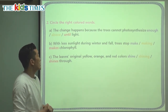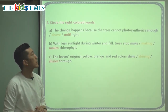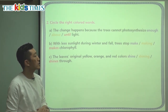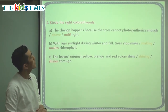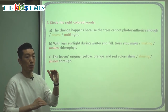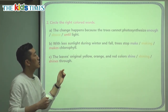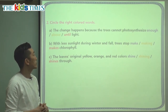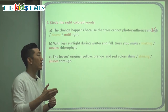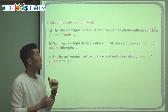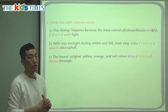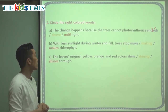Let's choose the correct answer. The change of the leaves' colors happens because the trees cannot photosynthesize enough light, above light, or until light. 'Enough' means as much as they need; 'above' means on top of; 'until' means to that point. None of those make sense except 'enough light.' Because they cannot make enough light for photosynthesis, they cannot continue to turn their leaves green — that's why they change.